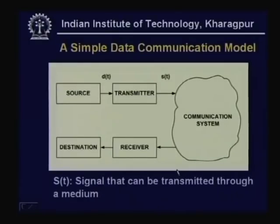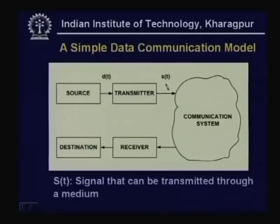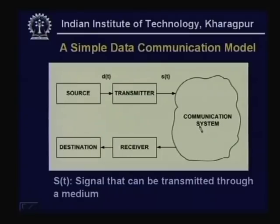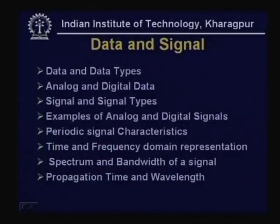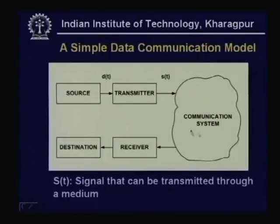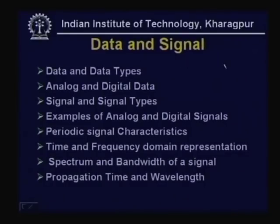The transmitter will convert data into a signal. Data is transformed into signal because data as such cannot be sent through the communication system — data has to be converted into some electromagnetic signal which can be transmitted through a medium. The signal can be electrical, electronic, or optical in nature. Before discussing the communication system further, let us first consider what we mean by data and signal.